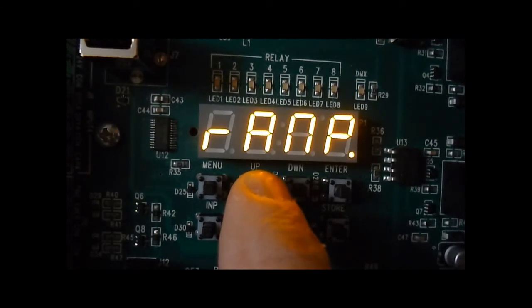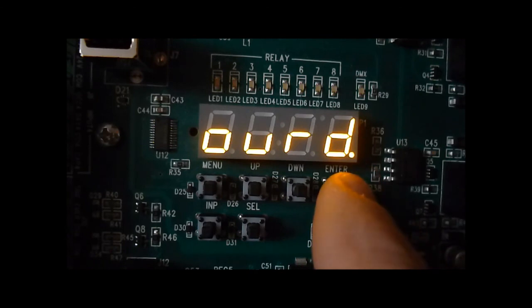The next is relay override. This menu item allows any relays to be overridden to on or off, or released from override control. Once these are set into position, no other inputs can change the settings for the relay.